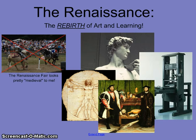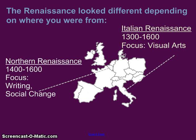What we're going to be looking at for the Renaissance has much more to do with art and learning and printing presses and poetry — things that are much more cultural than what you might think with the Renaissance Fair. The Renaissance has two major sections: the Italian Renaissance and the Northern Renaissance. The Italian Renaissance focuses on sculpture and painting, with people like Da Vinci and Michelangelo. The Northern Renaissance has more of a focus on writing and changing society, and that's where you'll see people like Shakespeare.